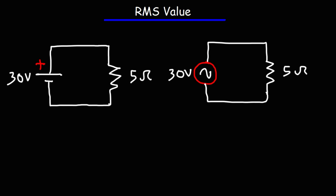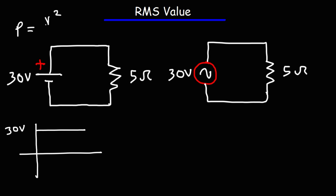In this video, we're going to talk about RMS value of AC circuits. RMS stands for root mean square. When dealing with AC circuits, it tells you the average power dissipation that would be equivalent in a DC circuit. So on the left, we have a 30-volt DC power source applied across a resistor. The power dissipation across that resistor is V squared over R, and that power dissipation is going to be the same if we apply an AC signal with a root mean square value of 30 volts.